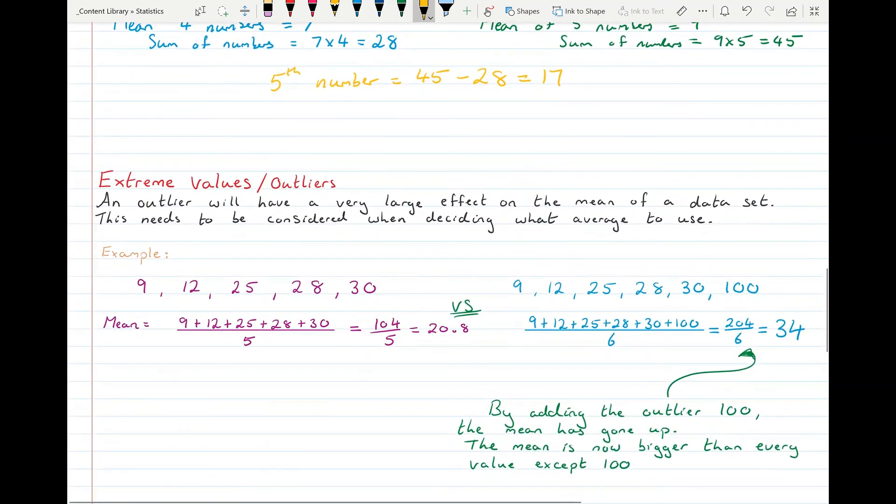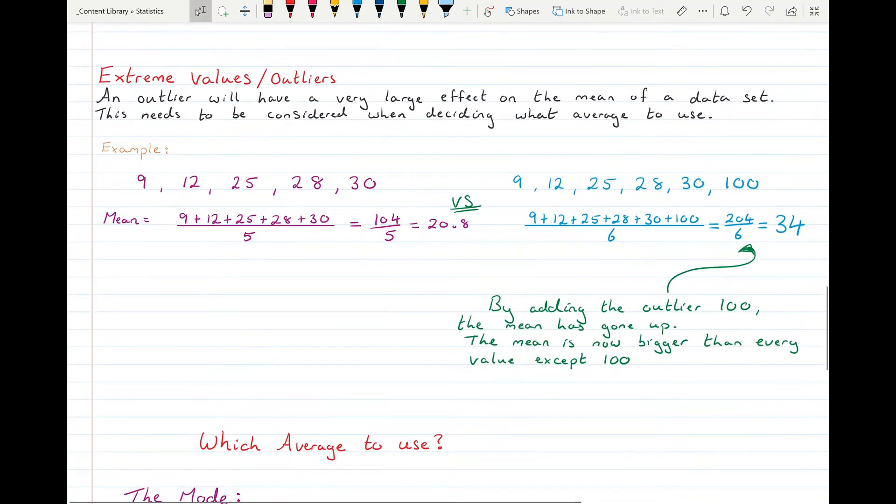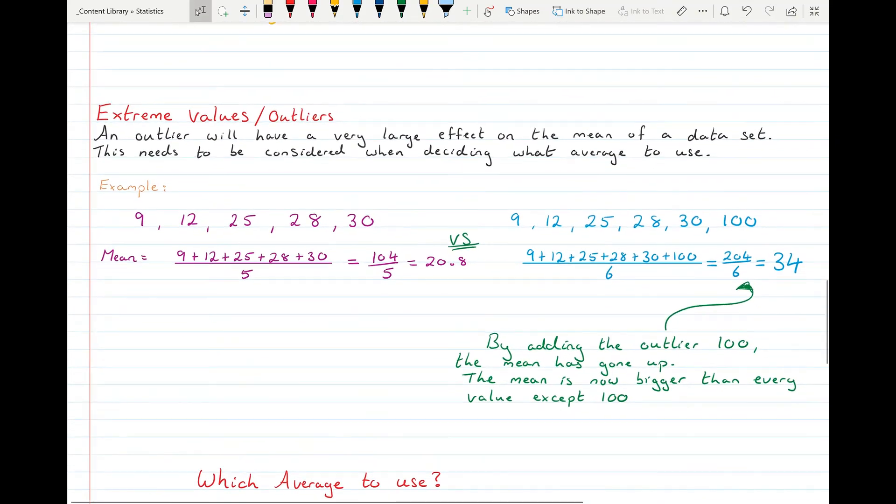The effect that extreme values have, or outliers, so we met outliers yesterday, the effect that they have on the different averages. It'll have a very large impact on the mean because the mean uses all the values in the data set. And it will have no or little impact on the median or the mode because they are only interested in the values in the middle.